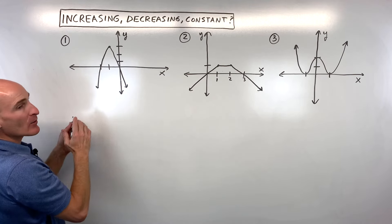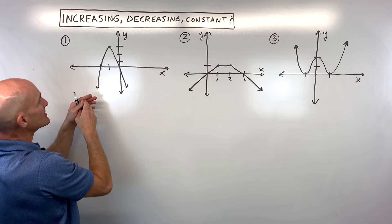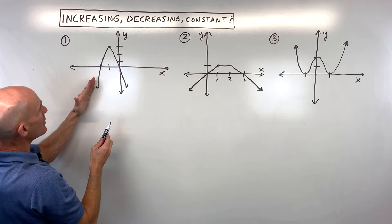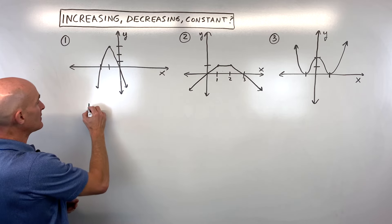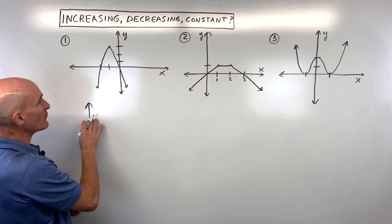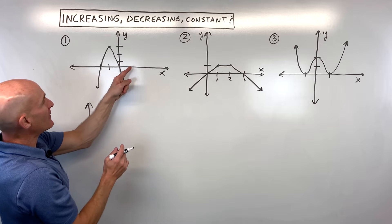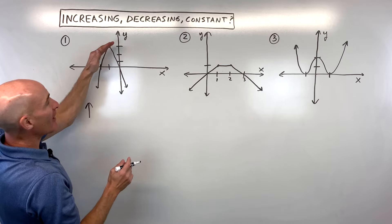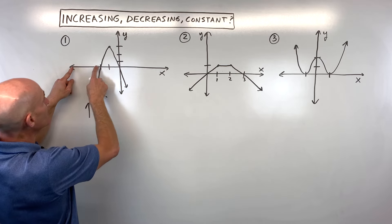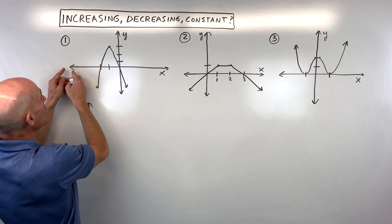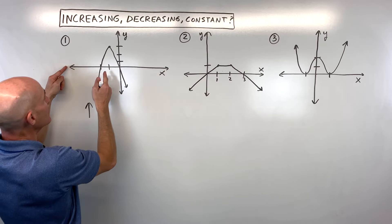For number one, I would scan from left to right, just like reading a book. I can see the graph is going up to the right, so that tells me it's increasing. For what x values are the y values increasing? That's going to be from negative infinity to negative one.